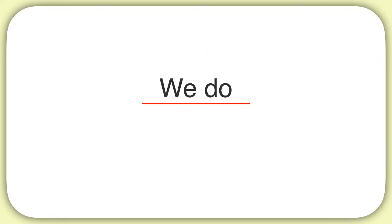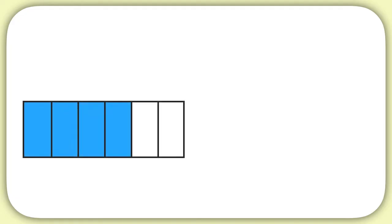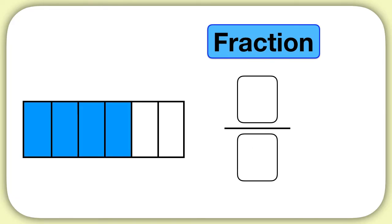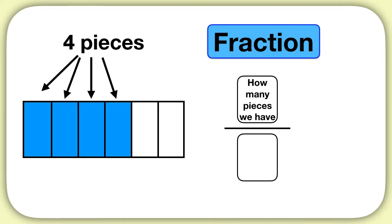Let's practice one of these together. Let's identify what fraction of this rectangle is shaded. Remember that fractions have two pieces, and the piece on top is how many pieces are shaded. How many shaded pieces do I have? You can see that there are four shaded pieces, so we'll write a 4 above the line.